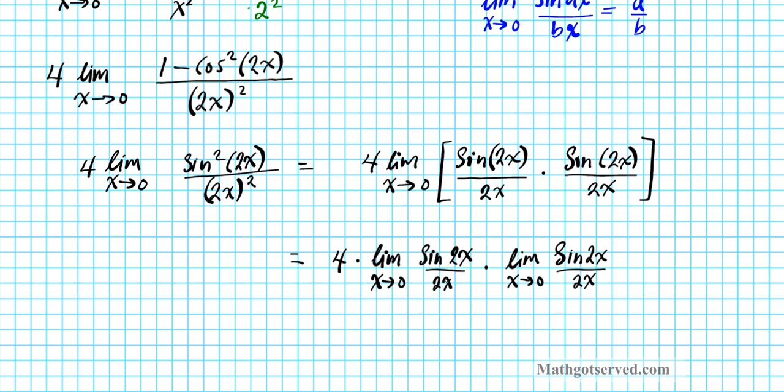2x and b is also 2 so we are going to have 4 times 2 over 2 that is the value of this limit times the value of the second limit will be 2 over 2 also. Your final answer will be 4 times 1 times 1 which is 4.